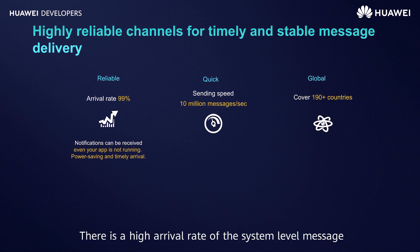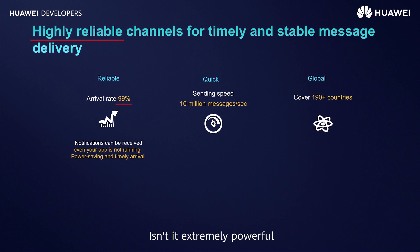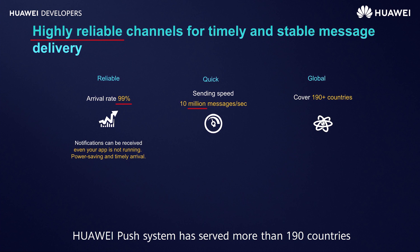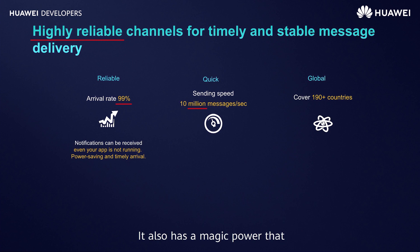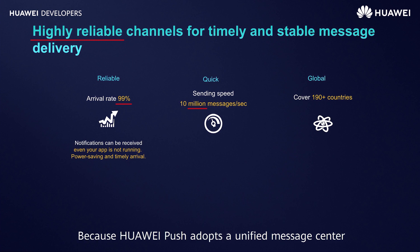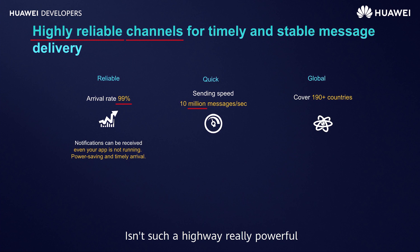High reliability. There is a high arrival rate of the system-level message channel provided by Huawei Push. The overall arrival rate is as high as 99%. It will push millions of messages per second and tens of billions every day. Moreover, by November 2019, Huawei Push System has served more than 190 countries. Your message can be delivered even without turning on the app, because Huawei Push adopts a unified message center. Therefore, messages can reach through it without app startup.